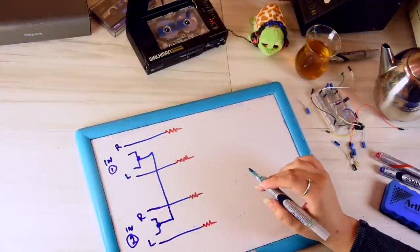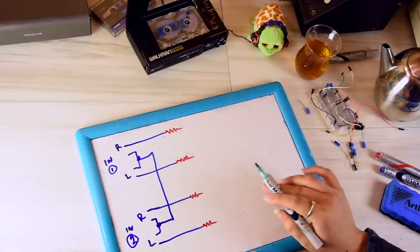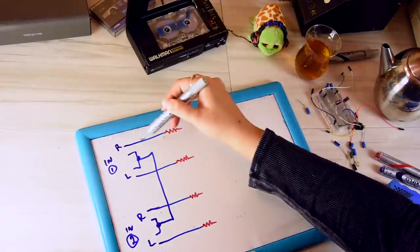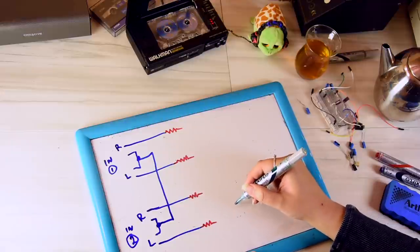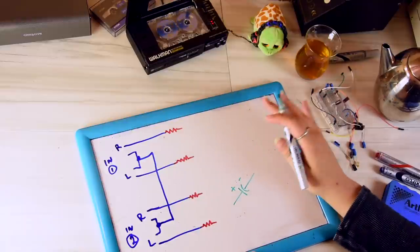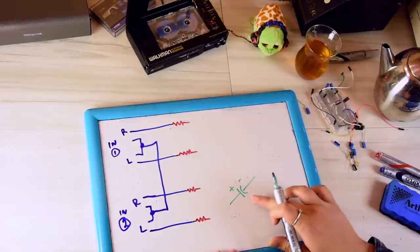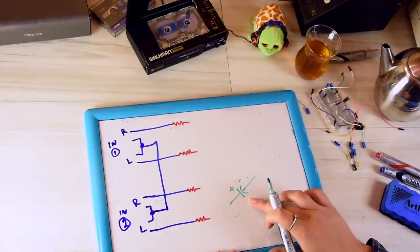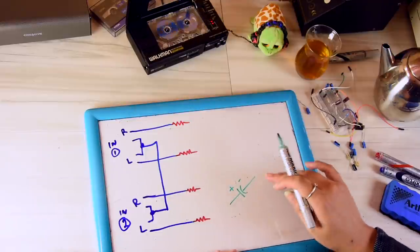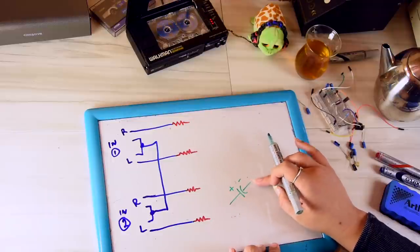One very important suggestion that somebody made was about the DC blocking capacitors. Now initially what I had done is I had just put them on the input just here in series. Just put them like that, positive and negative and that's it. However, the important suggestion was that I need bipolar capacitors here because this would strain the capacitor and it would get warm because it needs DC.